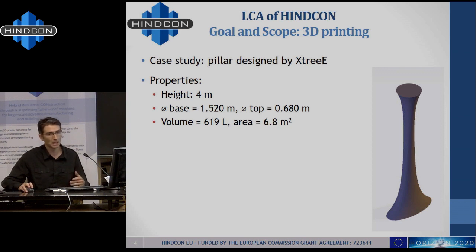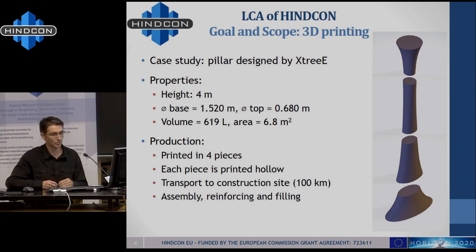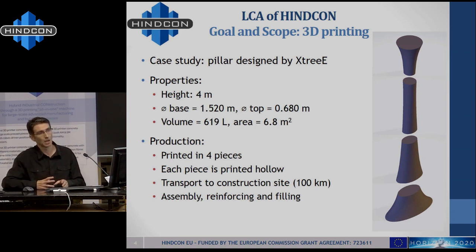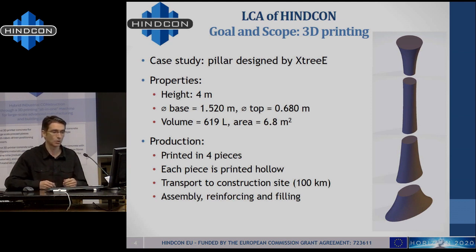Because it's quite a big construction element, the strategy to produce it with the Hincone machine would be to break it down into different pieces, so that each piece does not exceed the capacity of concrete that the machine can handle. The idea would be to print each of these four pieces hollow — only the outer structure — and then transport these outer empty shells to the construction site, which we assume here as an example is at a distance of 100 kilometers. Then at the construction site these four pieces are assembled, reinforced and casted with concrete to fill them.